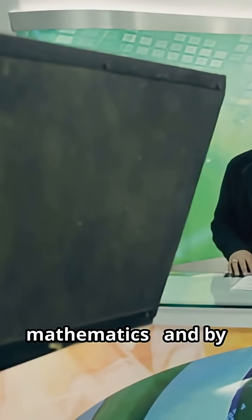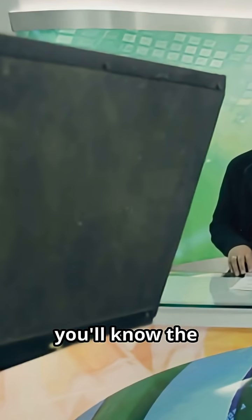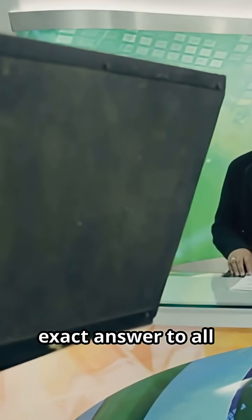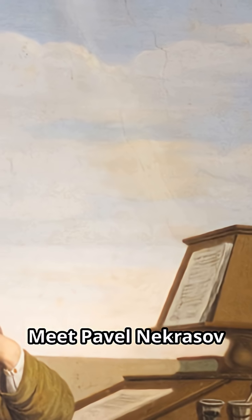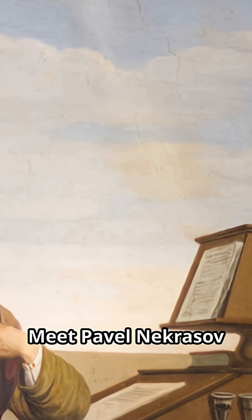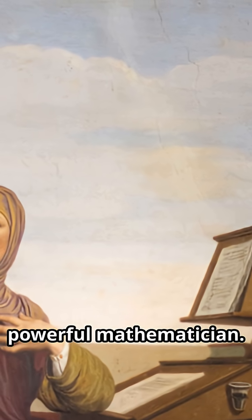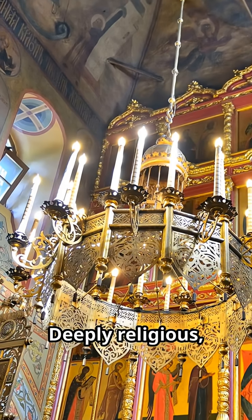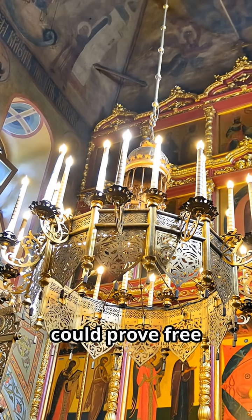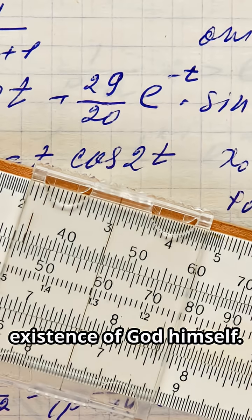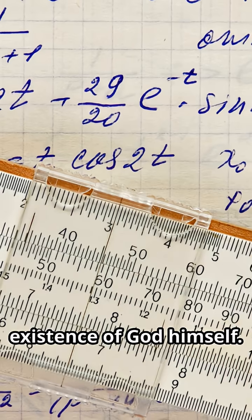I'm about to tell you the most incredible story in mathematics, and by the end you'll know the exact answer to all three questions. Meet Pavel Nekrasov, Moscow's most powerful mathematician, deeply religious. He believed math could prove free will and the existence of God himself. His rival, Andrei Markov, the atheist perfectionist who thought mixing religion with math was intellectual blasphemy.